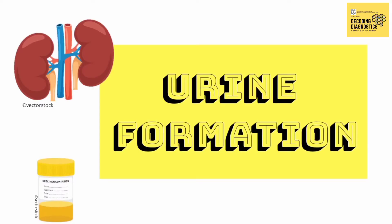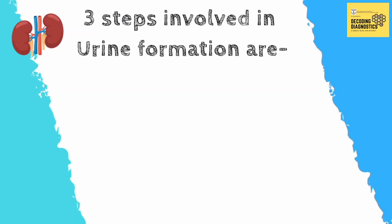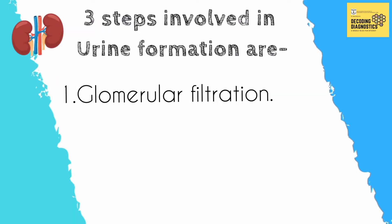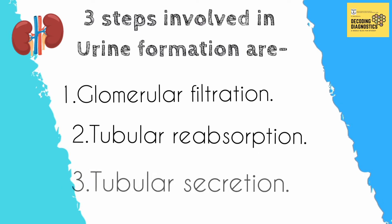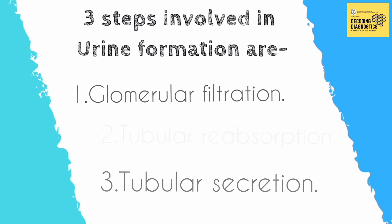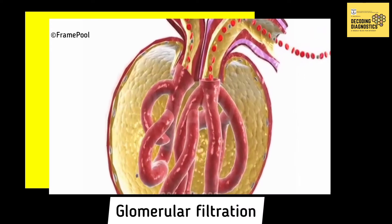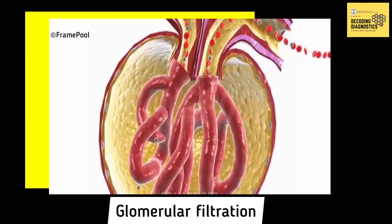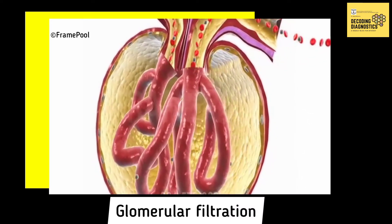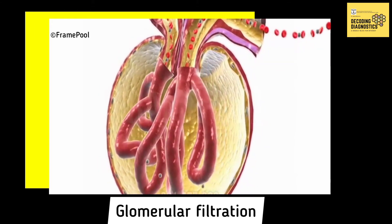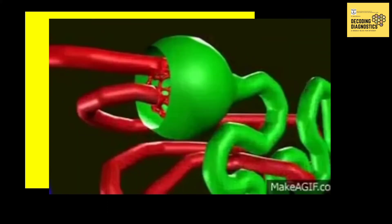Urine formation involves three steps: first, glomerular filtration; second, tubular reabsorption; third, tubular secretion. Glomerular filtration is the first step in urine formation — it is the filtration of blood carried out by the glomerulus.